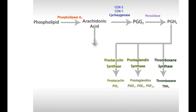Arachidonic acid could also be engaged in leukotriene production pathways, which is started by the action of 5-lipoxygenase enzyme to produce the intermediate 5-HPETE, which is further modified by the same 5-lipoxygenase enzyme to produce leukotriene A4.